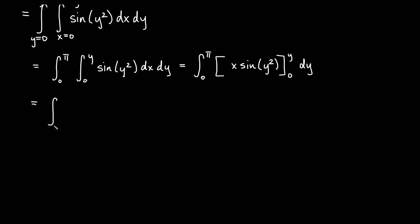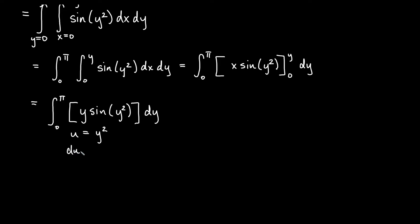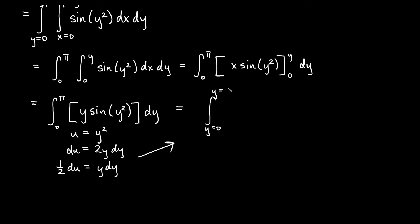For this one, u should equal y squared inside the sine function. Then du equals 2y dy, and since I just have y dy, I can say 1 half du equals y dy. Remember these are y bounds, so from y equals 0 to y equals pi, I have 1 half times the integral of sine of u du. Taking the antiderivative gives negative cosine of u, so I get negative 1 half cosine of u, still with y bounds y equals 0 and y equals pi.